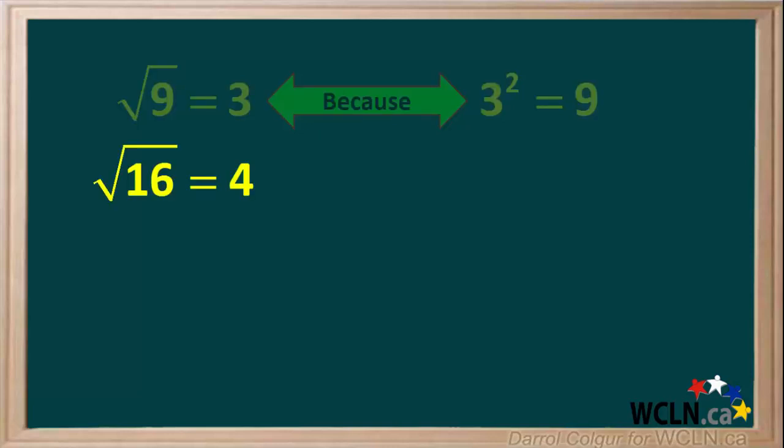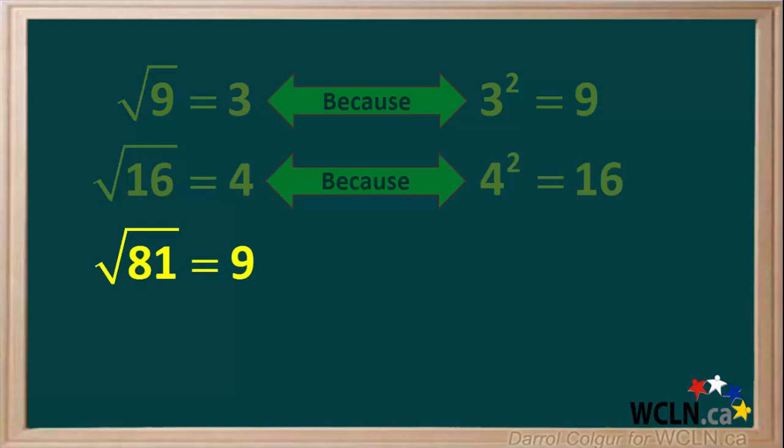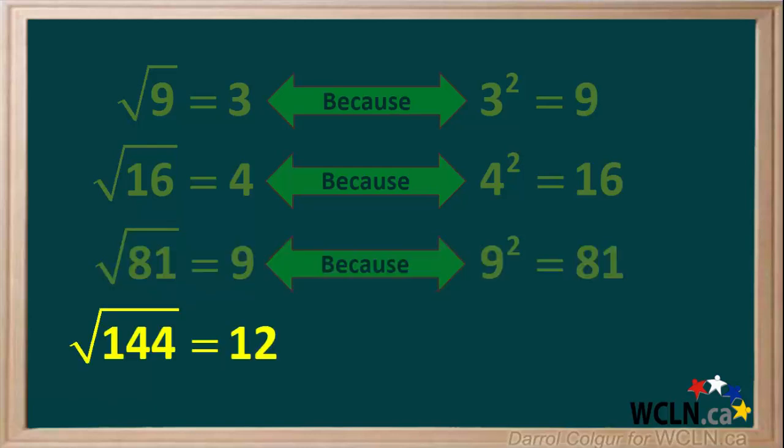Or the square root of 16 is equal to 4, because 4 squared is equal to 16. Similarly, the square root of 81 is equal to 9, because 9 squared is equal to 81. And the square root of 144 is equal to 12, because 12 squared is equal to 144.